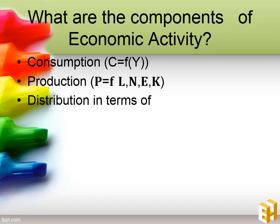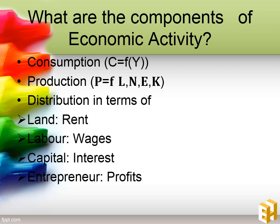Third is distribution. In terms of distribution, land gets its rent, labor gets its wages, capital gets its interest, and the entrepreneur gets its profits. Whatever income you've received or spent will come back to you in these forms. If you're giving your land, you'll receive rent. If you're giving your labor, you'll receive wages and salaries. For capital, you'll receive interest, and for entrepreneurship, you'll receive profits. So these are the components of economic activity — you consume, you produce, and the income is distributed.